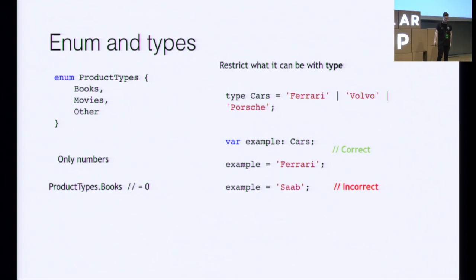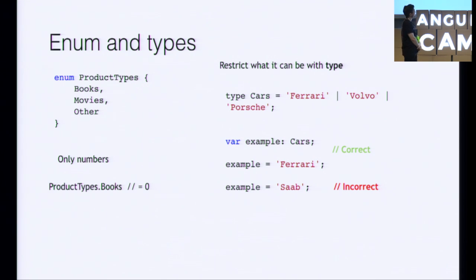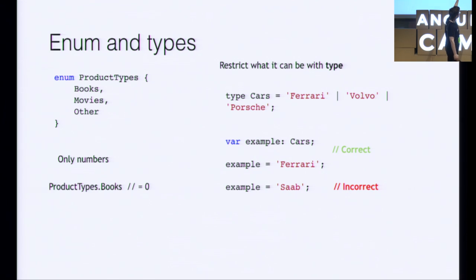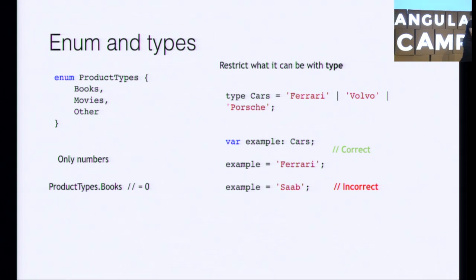We have enums and types. Enums are a pretty common construct in most languages — we have a set of names like books, movies, other, and so on, with values being numbers. This is a limitation because sometimes we want a string value. Then we can use the type keyword. In this case, we tell cars that it can only be Ferrari, Volvo, or Porsche. In the example, we declare a variable of type cars, assign it Ferrari — everyone's happy. But on the last line, we try to assign it 'sob', it's incorrect, and the compiler screams at us, which is what we want.